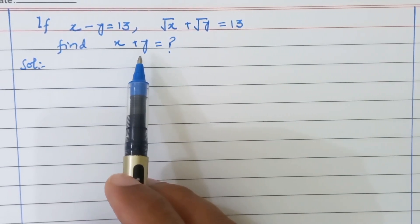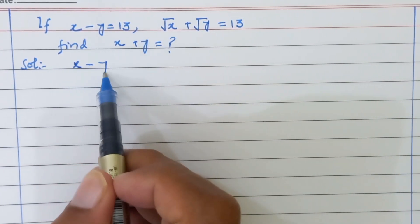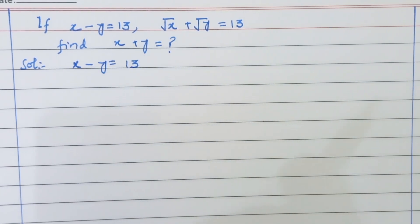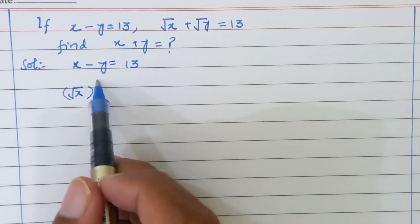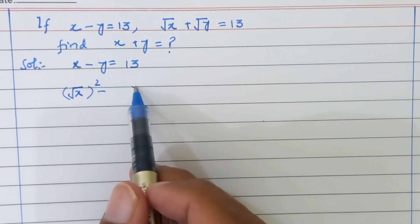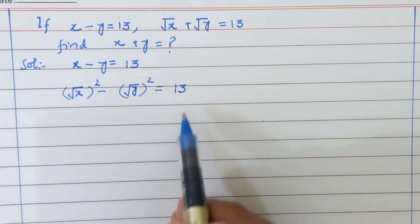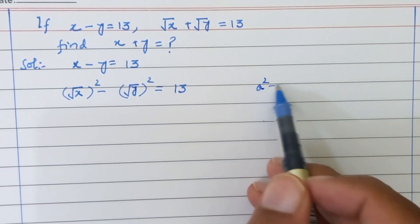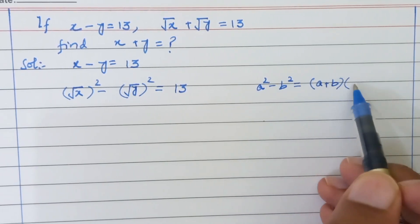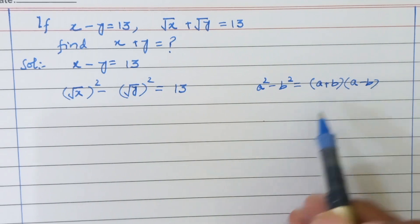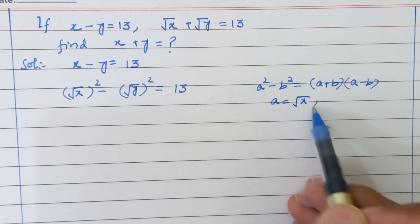Let us see how to solve this type of equation. Writing the first equation: x minus y equals 13. So, this can be written as root x squared minus root y squared equals 13. Now we know the formula a squared minus b squared is equal to a plus b times a minus b. Using this formula here, the value of a is root x and the value of b is root y.